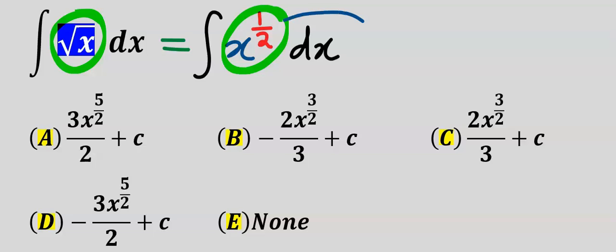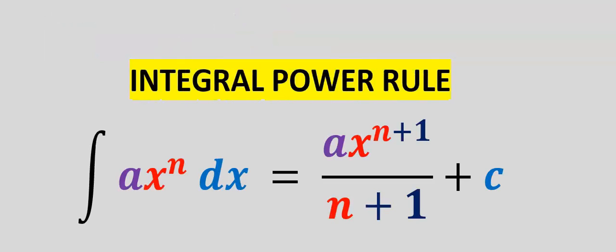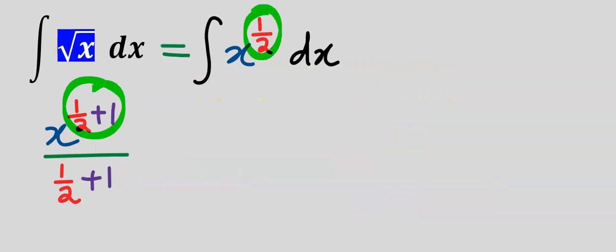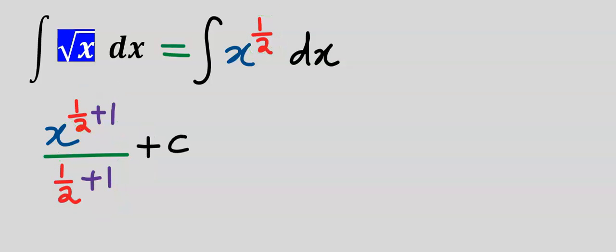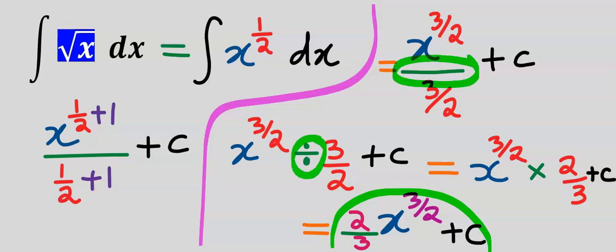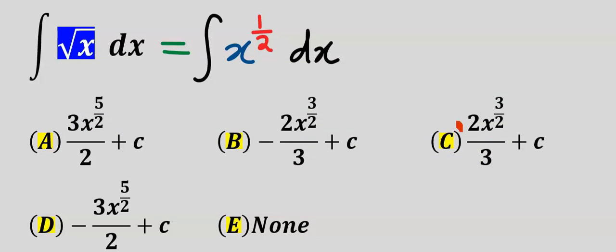We are going to add 1 to the power of 1 over 2 and apply the integral power rule: add 1 to the power and bring everything down to the denominator, and don't forget your constant. Solving carefully, this is our final result. Remember we need to change the division sign to a multiplication sign, and when you do that it flips — 2 goes to the numerator and 3 goes to the denominator. From the options our answer is C.